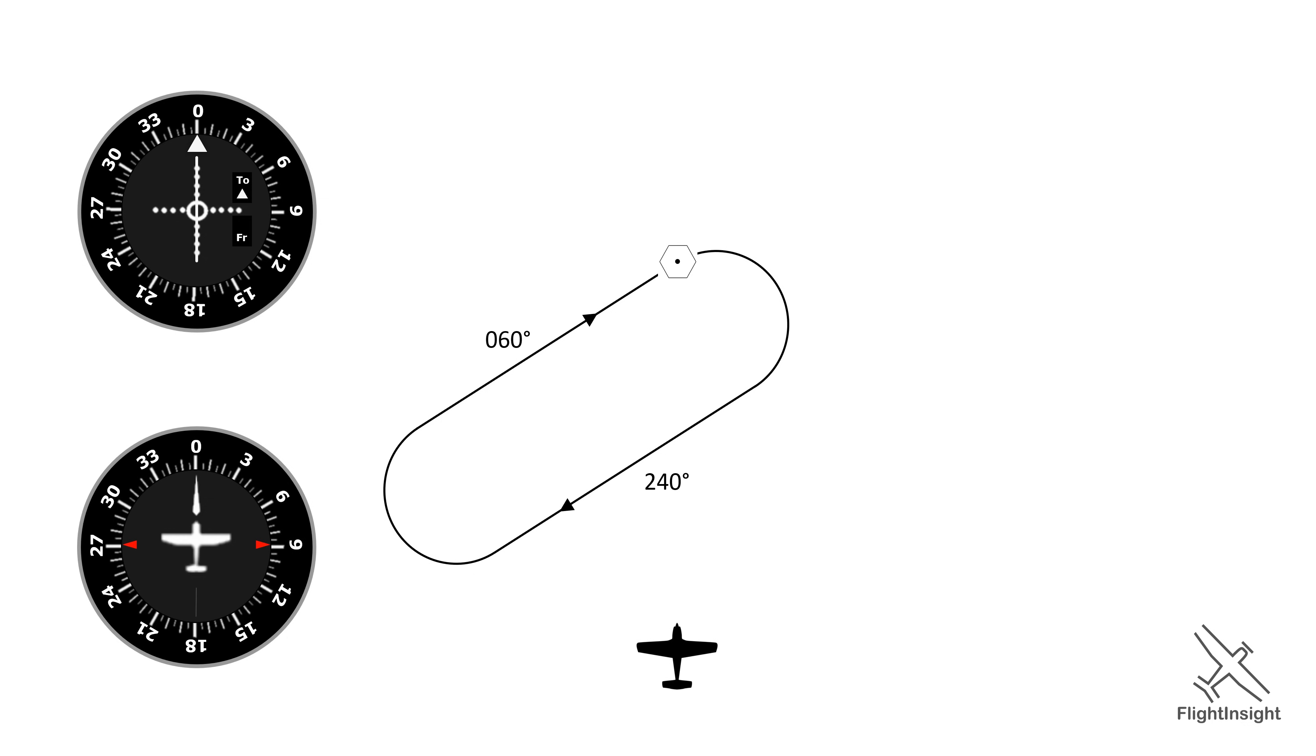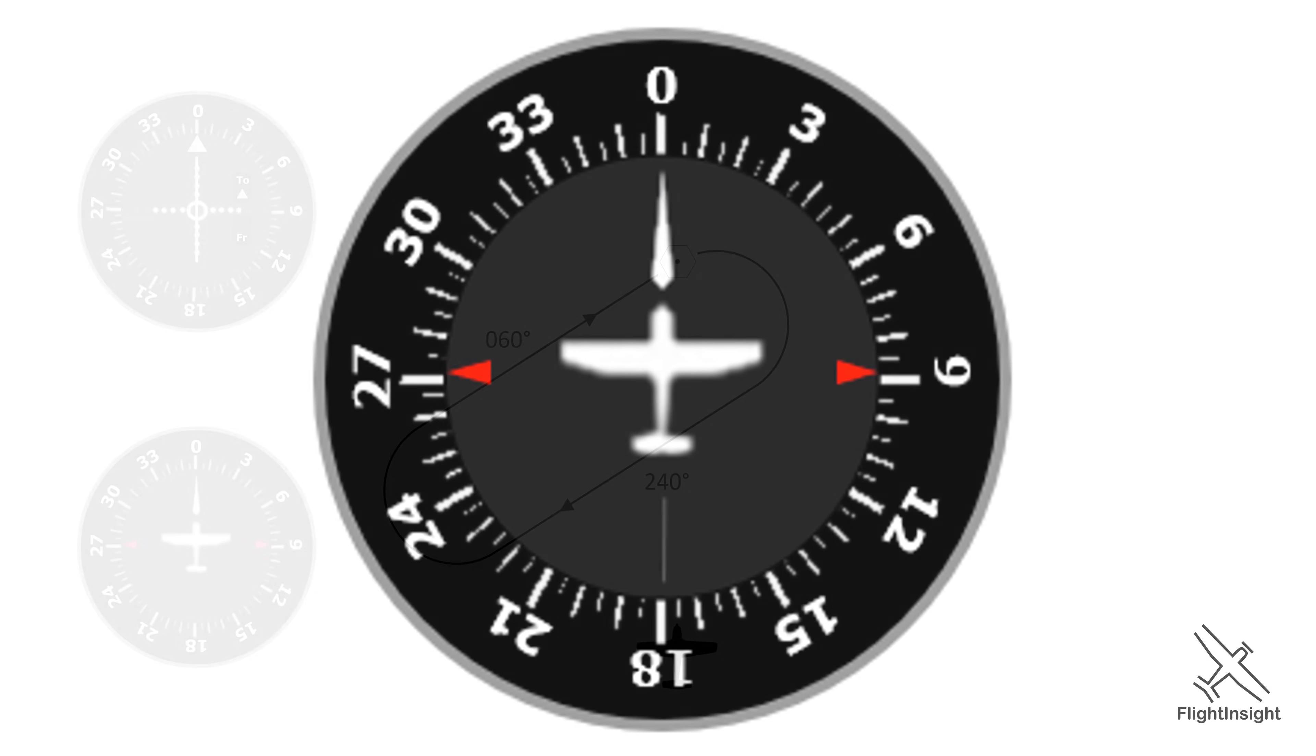So what kind of entry do we make? It might be easy to see with the racetrack pattern drawn out and our position plotted for us to look at, but we don't have that luxury in the cockpit. Let's take a closer look at our heading indicator.